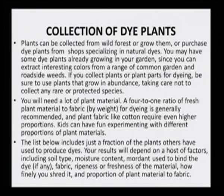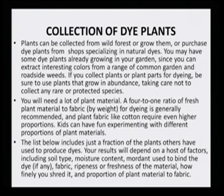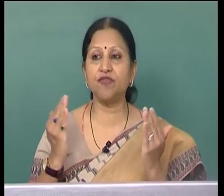Any part above the root can be a renewable source of plant material. You may need a lot of plant material — a 4:1 ratio of fresh plant material to fabric by weight is generally recommended, and plant fibers like cotton require even higher proportions. Results will depend on factors including soil type, moisture content, the ripeness and freshness of the material, how finely it was shredded, and the proper proportion of plant material to fabric.